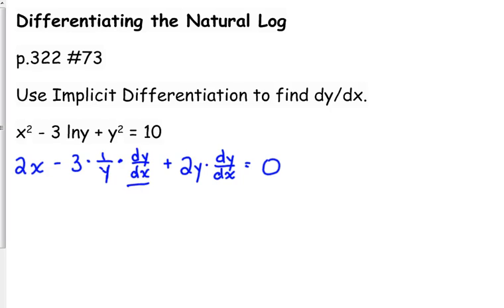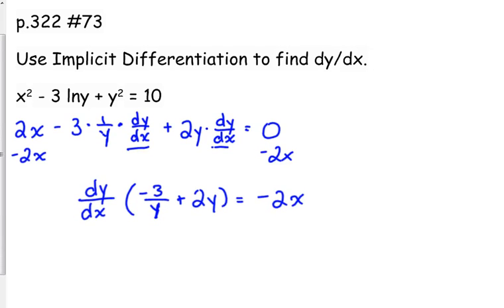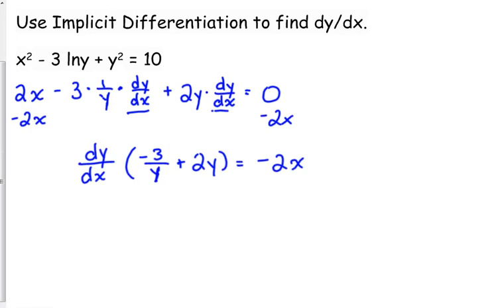We need to isolate the dy over dx, so let's start by moving the 2x to the other side, and at the same time, I'm going to go ahead and factor out that dy over dx just to save myself some time and effort. And then we divide by that binomial.